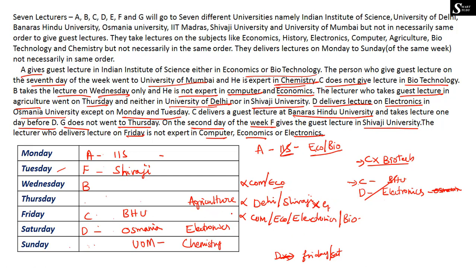G cannot be on Thursday. With A on Monday, F on Tuesday, B on Wednesday, D on Saturday, G on Sunday, and C on Friday, the only remaining person for Thursday is E. So G is placed on Sunday and E is placed on Thursday.